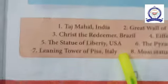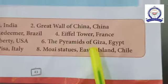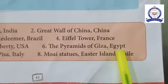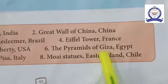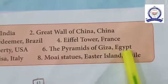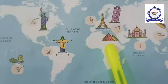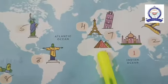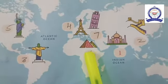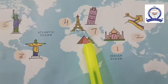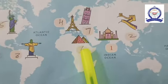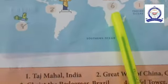The sixth one is the Pyramids of Giza. It is in Egypt, which is in the Africa continent. The Pyramids of Giza, Egypt — that is number 6.